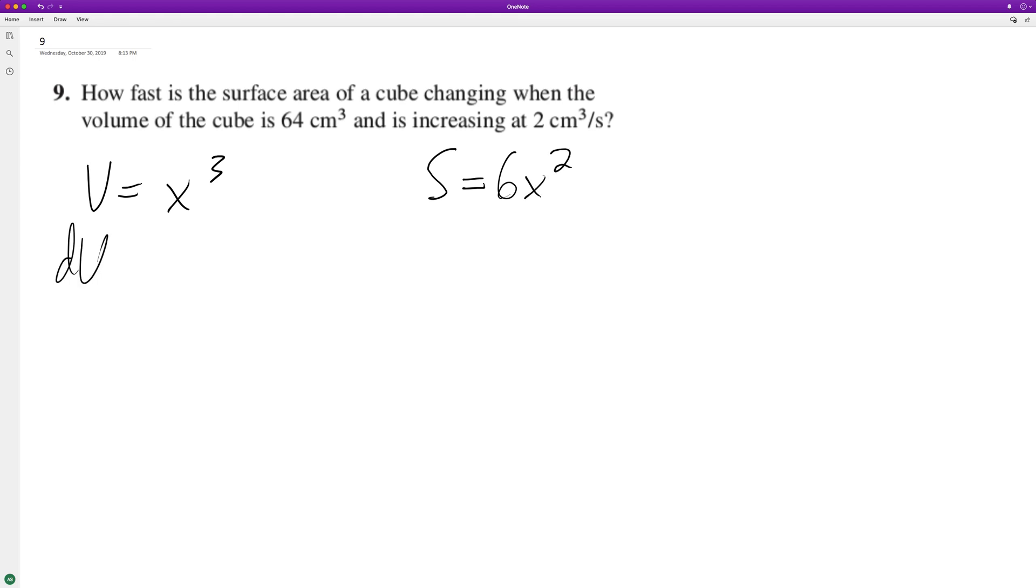So the volume's change in volume with respect to time, dV/dt, is equal to 3x squared dx/dt. So we know that the volume is increasing at 2 centimeters cubed per second.